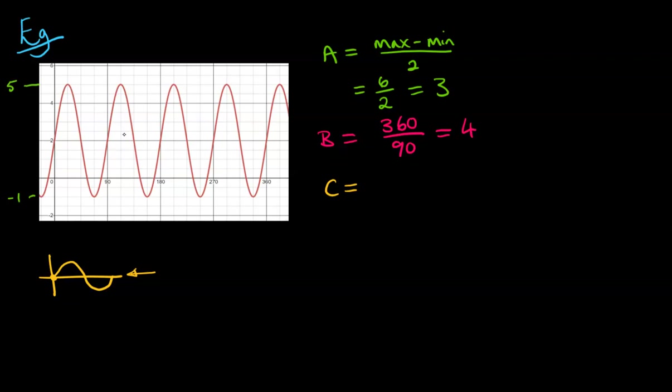It might be different for different curves as well, whether it's easier to look at the peak or where it goes through the axis. So in this case, we've got no horizontal shift, so the value for C will be 0.